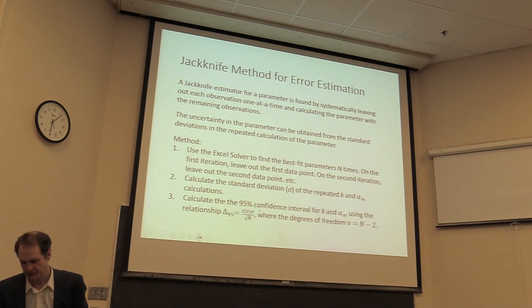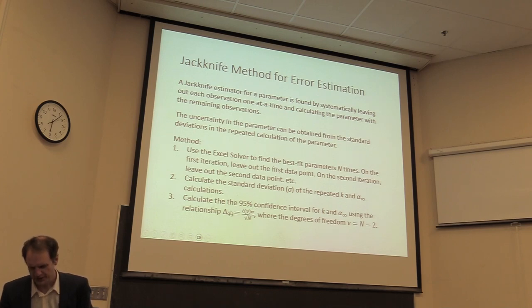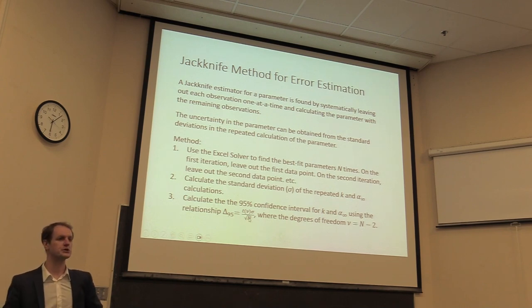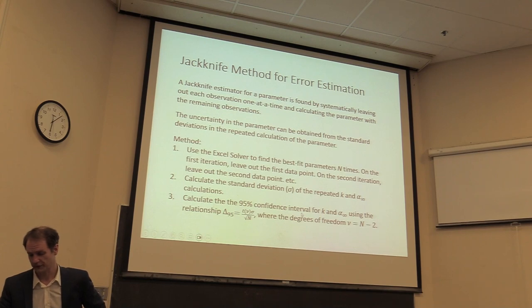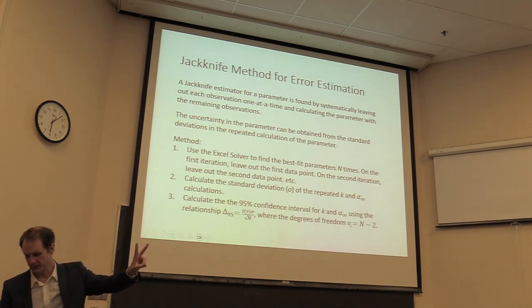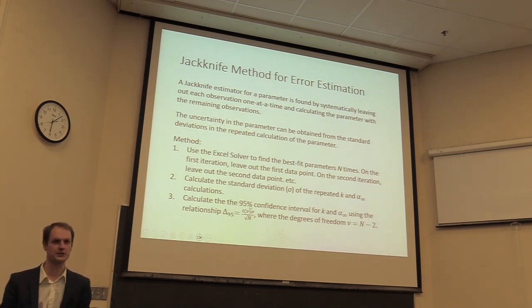To obtain the 95% confidence intervals, we use the equation we've used many times already. You calculate the 95% confidence interval by taking the student-t coefficient times σ divided by the square root of the number of measurements n. Here, n is the total number of measurements and ν is the number of degrees of freedom in the fit. If you have n measurements and you're fitting two parameters — k and alpha-infinity — then ν equals n minus 2. You look up t(ν) in the student-t table.